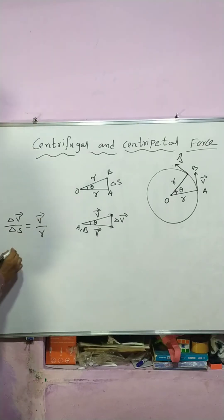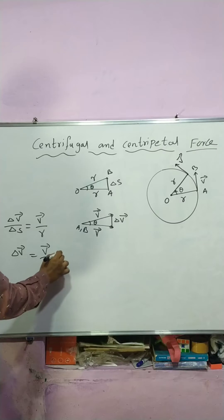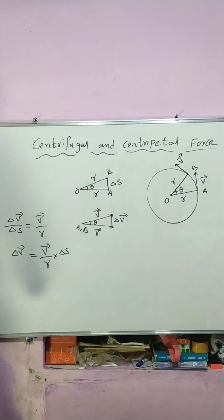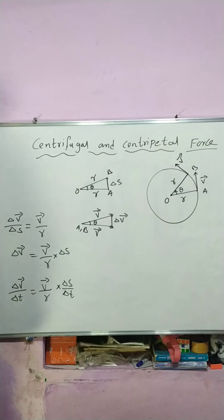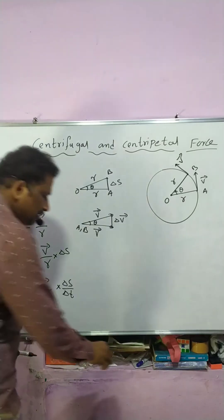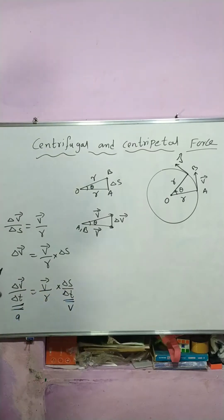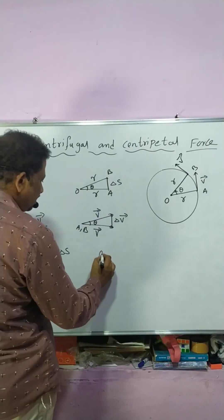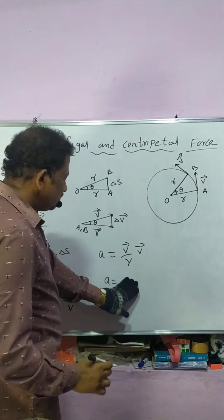So delta V = (V / R) × delta S. Dividing both sides by delta T: delta V / delta T = (V / R) × (delta S / delta T). Now, delta V / delta T is the rate of change of velocity, which is acceleration, and delta S / delta T is velocity V. So acceleration = V² / R.